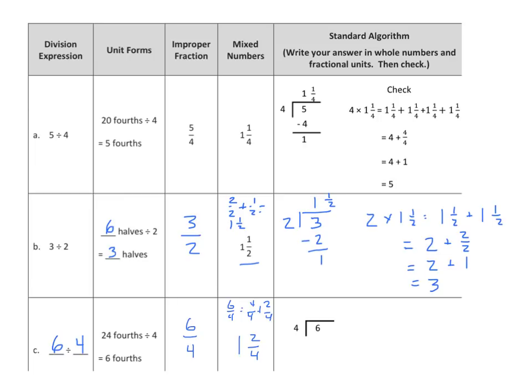Now we do the division. 4 goes into 6 once. 1 times 4 is 4. I subtract, I get 2. That's 2 left out of 4. So instead of using a remainder, we write it as 1 and 2 fourths.